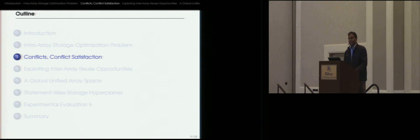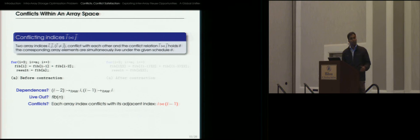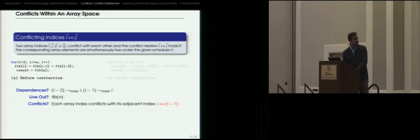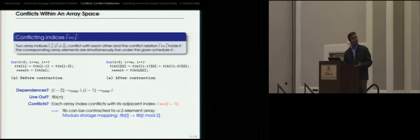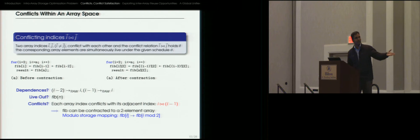Our array space partitioning approach is based on the notion of conflict satisfaction. Two indices i and j within an array space conflict with each other if the corresponding array elements are simultaneously live—that is, if they have overlapping lifetimes. For example, in a loop computing the nth Fibonacci number, Fib[i] and Fib[i-1] are simultaneously live, so index i conflicts with index i-1. The length of this conflict is equal to one, and from this we can infer the 1D array can be contracted to just two slots, with the resulting modular storage mapping Fib[i] → Fib[i mod 2].